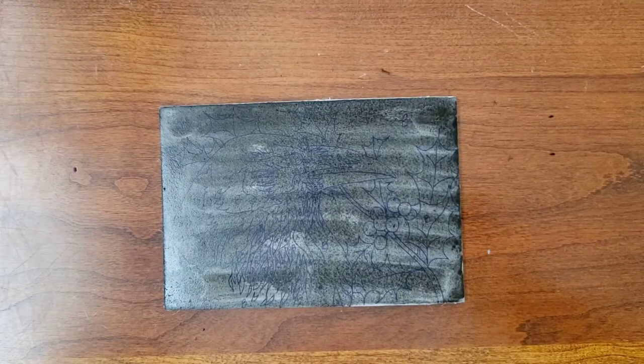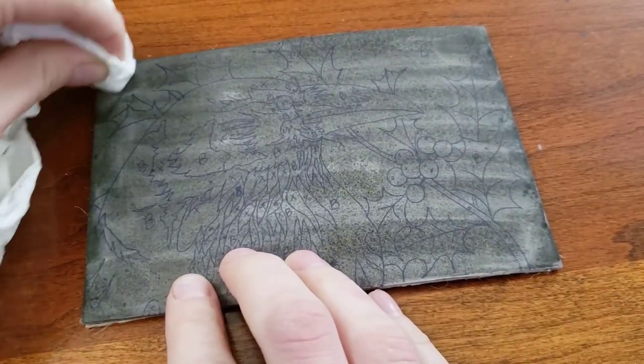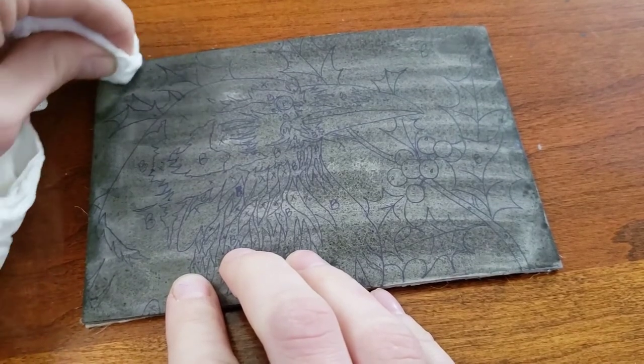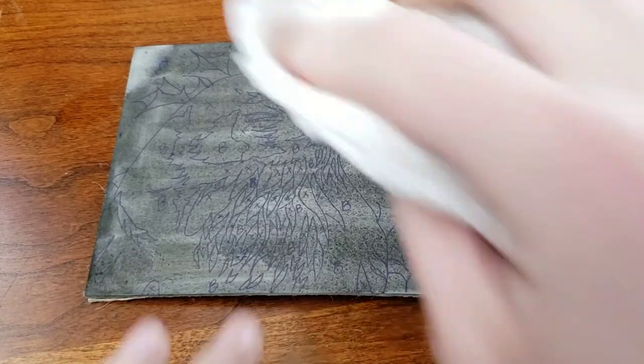Now the block is ready to be cut. If you are dissatisfied with what you have done on the plate, you can remove everything with rubbing alcohol as I am demonstrating in the upper left corner. At this point, you still haven't altered the linoleum in a permanent way.